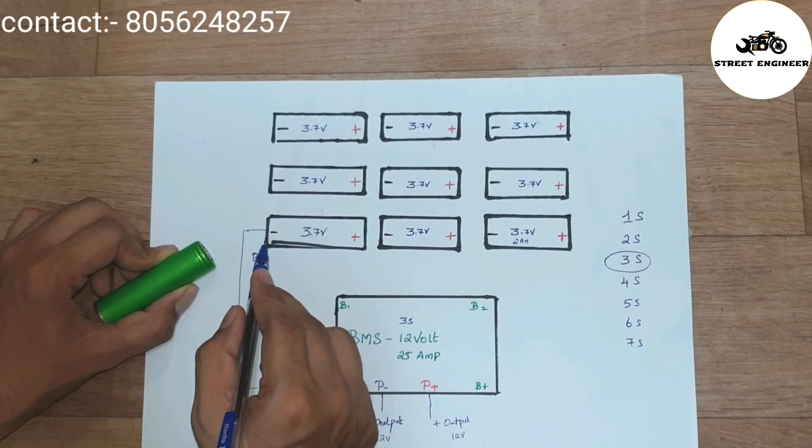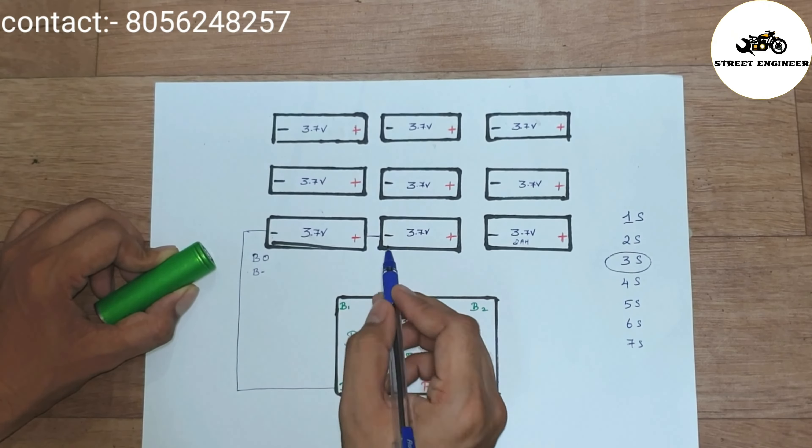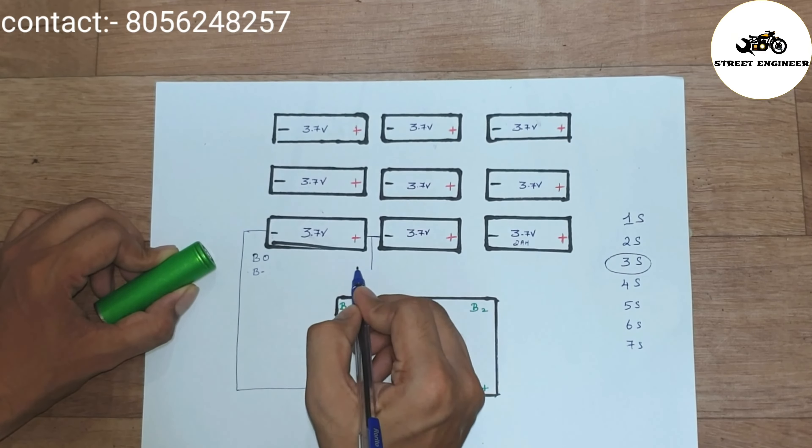Now, to make series, connect first cell positive with second cell negative and consider as a B1 and connect with BMS B1.